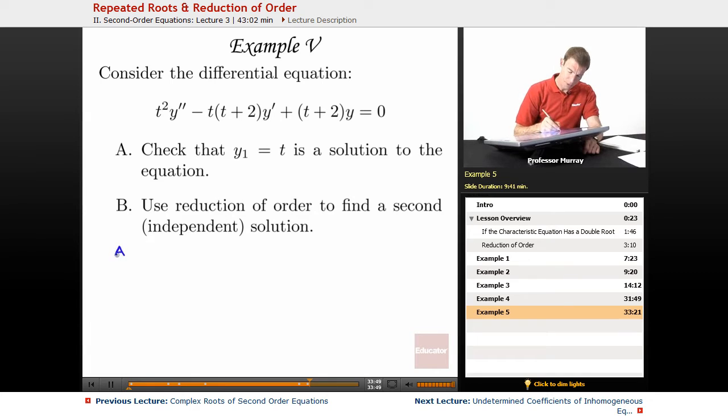So to solve that, for part A, we're given that y₁ equals t might be a solution. So if y₁ is equal to t, y₁' would be 1 and y₁'', derivative of 1, is 0.